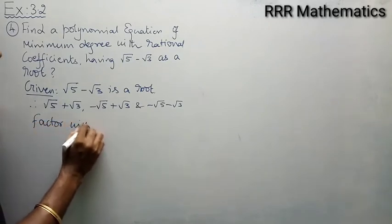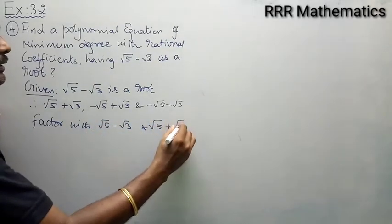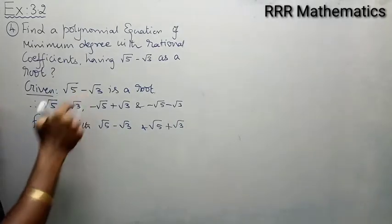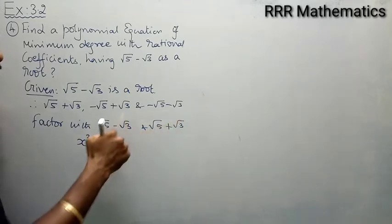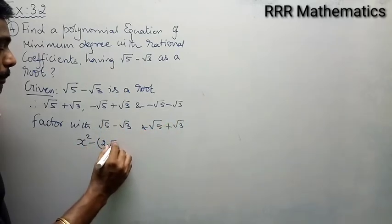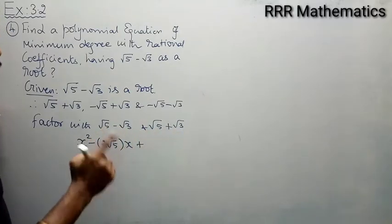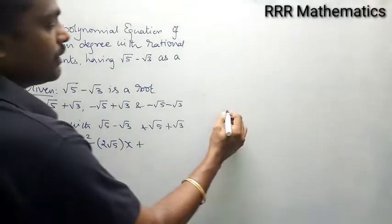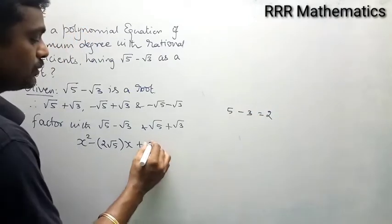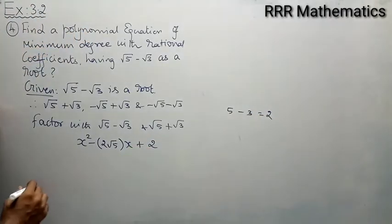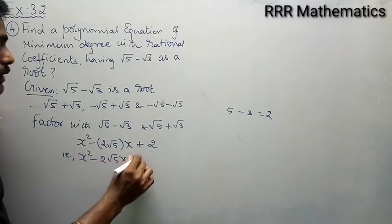Factor with √5 minus √3 and √5 plus √3. I will make by using these two: x² minus (sum of roots)x plus (product of roots). The sum is √5 minus √3 plus √5 plus √3, the √3 terms cancel giving 2√5. The product is (√5 - √3)(√5 + √3) = (√5)² - (√3)² = 5 - 3 = 2. That gives x² minus 2√5·x plus 2.